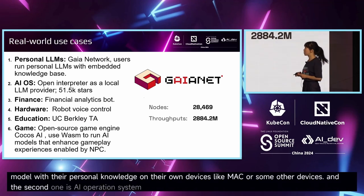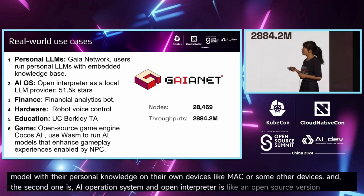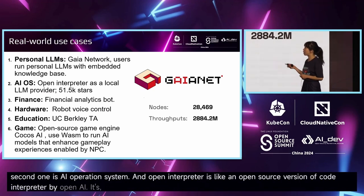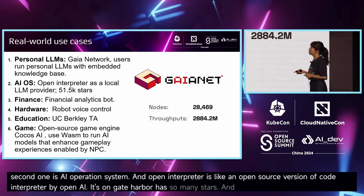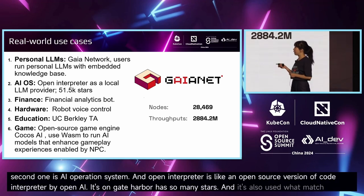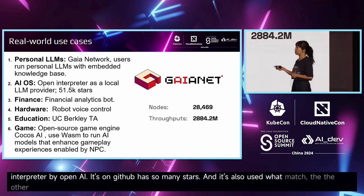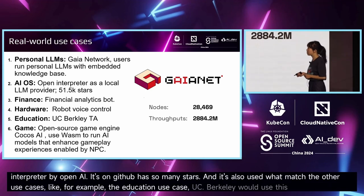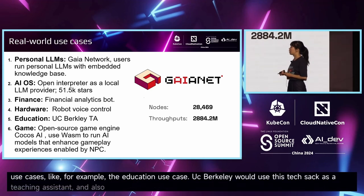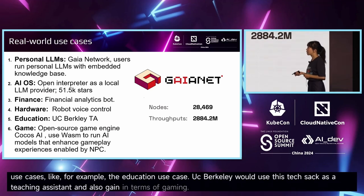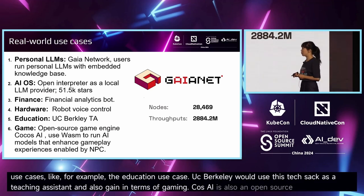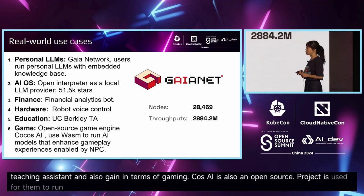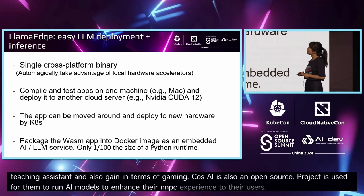The second use case is an AI operating system. Open Interpreter is like an open-source version of Code Interpreter by OpenAI — it has so many stars on GitHub and also uses WASM edge. Another use case is education: UC Berkeley uses the tech stack as a teaching assistant. In terms of gaming, Cosplay AI is an open-source project that uses WASM to run AI models to enhance their NPC interactions with users.